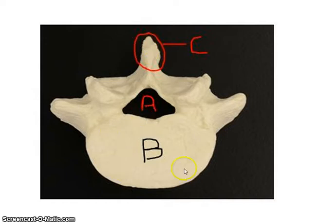So we have the body, the vertebral foramen where the spinal cord goes through, and the posterior spinous process.